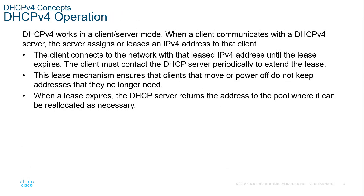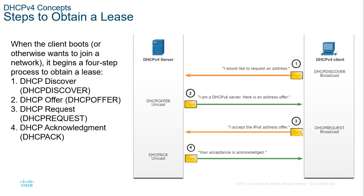Let's talk about how DHCP operates. It works in a client-server mode. When a client communicates with a DHCP server, the server assigns or leases an address to the client. The client connects to the network with that leased address until the lease expires. If the client doesn't request a renewal, the DHCP server returns the address to the pool for reallocation. The process of obtaining a lease is known as DORA: Discovery, Offer, Request, Acknowledgement.